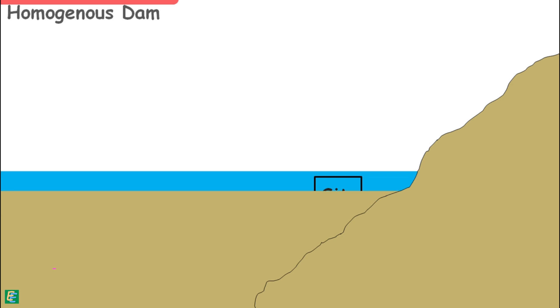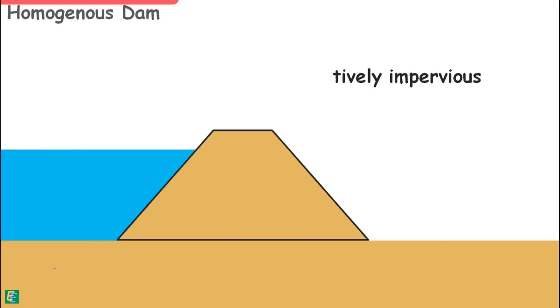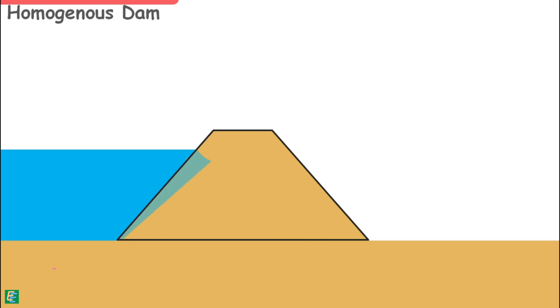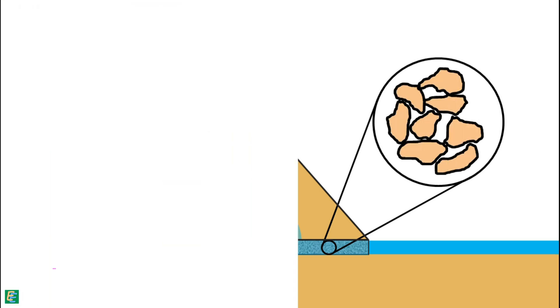Fine-grained soils are relatively impervious and are more effective in holding back water. Still, some water will seep through the dam body, and this may generate high pore water pressure at the exit point on the downstream slope, causing soil particles to be removed with the flow. To channelize seepage out of the dam in a controlled manner, a horizontal blanket drain made of coarse-grained soil is provided at the base of the downstream part of the dam.